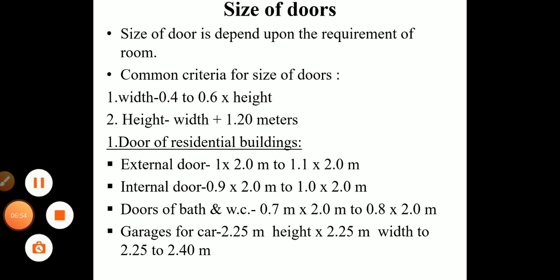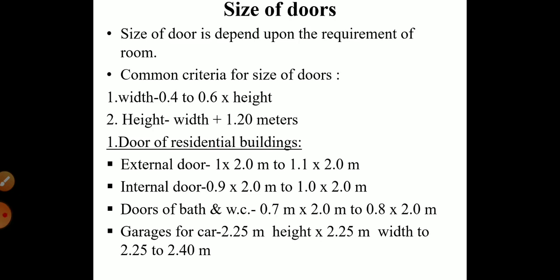The next part is the size of the door. There are various different sizes of doors as per the requirement or as per the type of building — it depends upon the requirement of the room. The common criteria for the size of the door are: first, width — it should be 0.4 to 0.6 multiplied by the height. Second, height — it should be the width plus 1.20 meters.